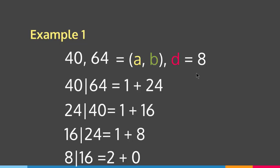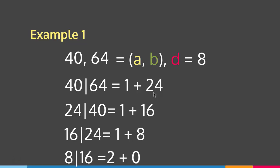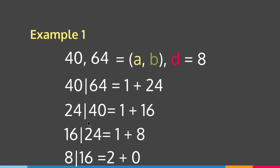To find the gcd of 40 and 64 using the Euclidean algorithm, we divide 64 by 40: quotient 1, remainder 24. Since the remainder is not 0, we continue. 40 divided by 24 gives quotient 1, remainder 16. Then 24 divided by 16 gives quotient 1, remainder 8. Finally, 16 divided by 8 equals 2 with remainder 0. We stop and take the divisor, 8, as the gcd of 40 and 64.